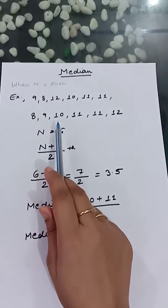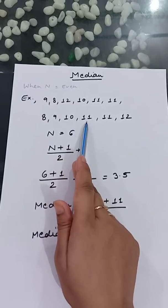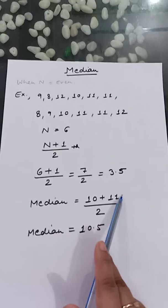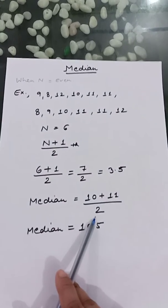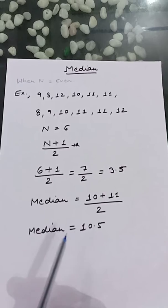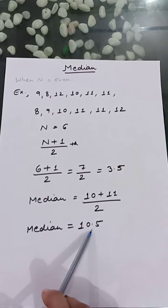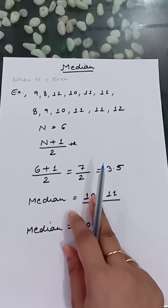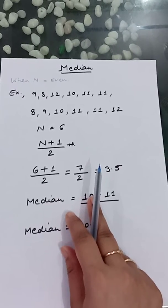And divided by 2, so our median will be 10.5. So in this session we have seen how to compute median when data is ungrouped and our given n is even.